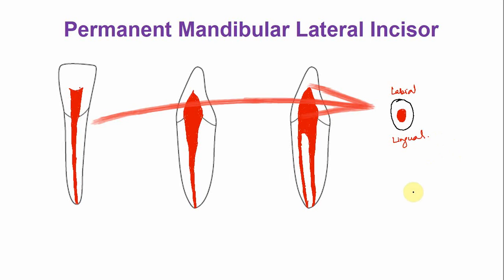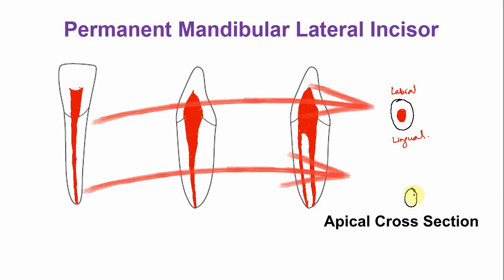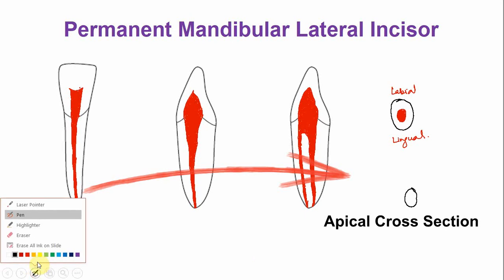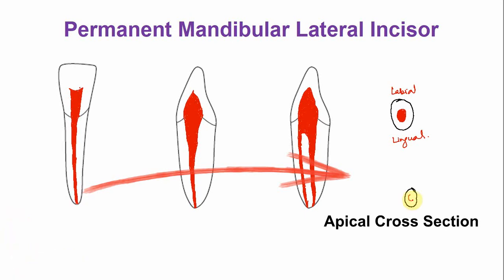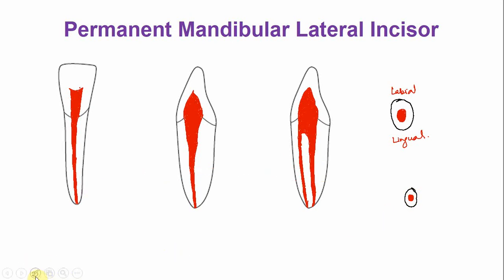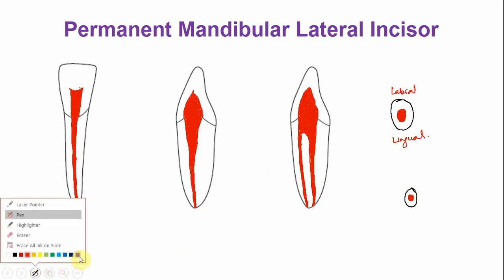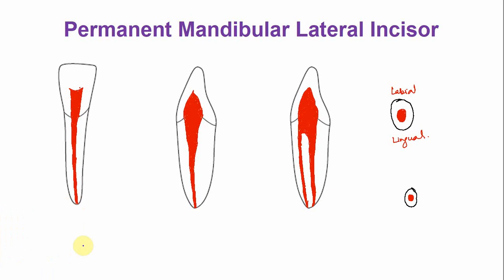In the outline of the root, the canal is more rounded. With advancing age, there is more deposition of tertiary dentine.